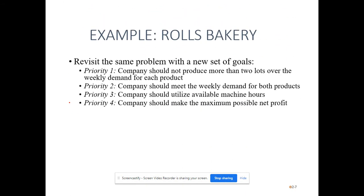Priority one, goal one: the company should not produce more than two lots over the weekly demand of each product — which is 3 and 4 — so they should not produce more than 5 and 6 lots respectively. Priority two, goal two: the company should meet the weekly demand for both products. Priority three: machine hours used should be more than or equal to 150. Priority four: the company should make maximum possible net profit.